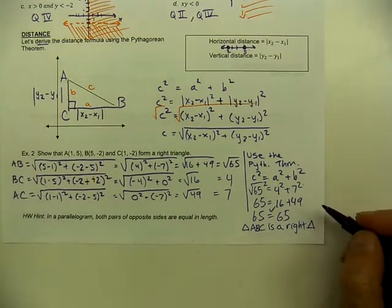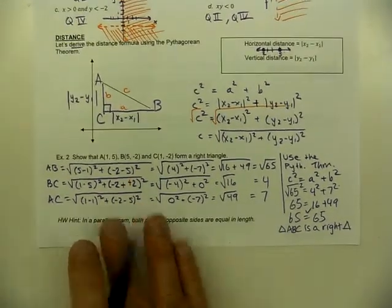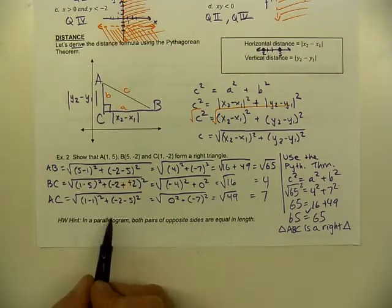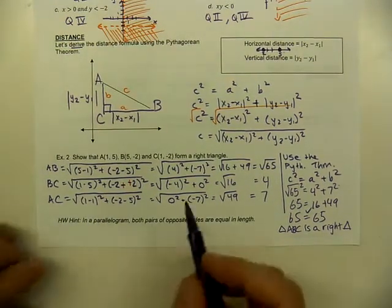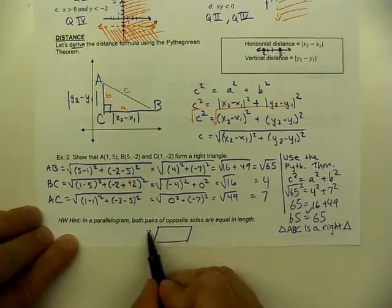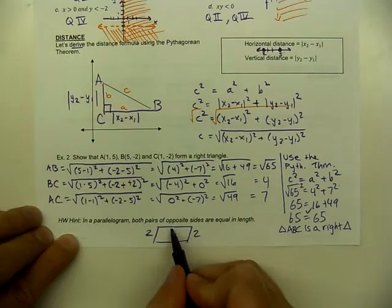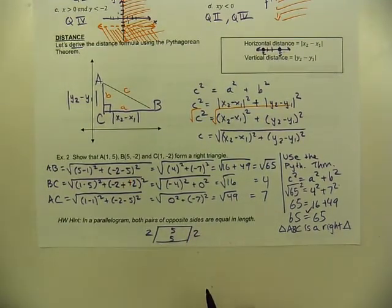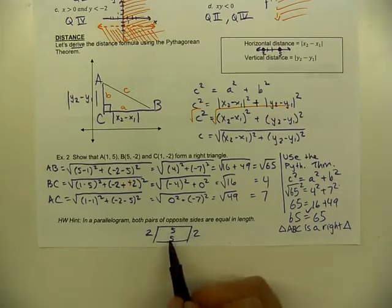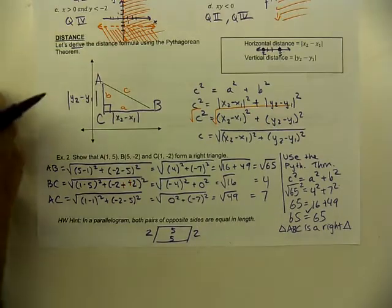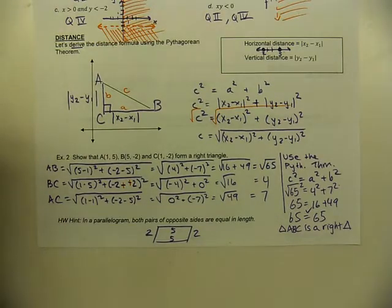Homework hint: one of the homework problems asks about a parallelogram. Remember that in a parallelogram, both pairs of opposite sides must have the same length. You'll compute four distance formulas, and if both pairs of opposite sides are equal in length, you know it's a parallelogram.